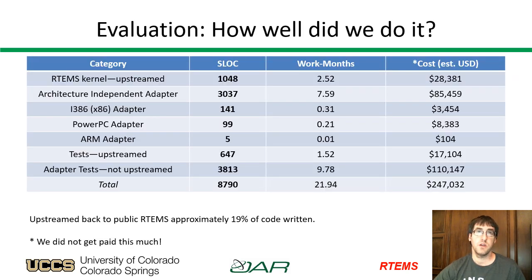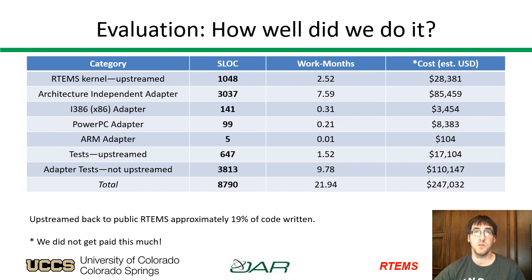Although source lines of code (SLOC) is generally considered a terrible measure of productivity, some useful insights can be made here. 3,037 lines of code are architecture-independent and shared across all architectures, and less than 250 lines of architecture-dependent code is present in the adapters. Almost half of the code written was for DIOS plus RTEMS specific tests. The effort needed to add a new architecture is quite small, with only 5 lines of code added to provide ARM support. Approximately 19% of the code was submitted upstream back to the RTEMS.org public Git repository. Credit also goes to the DDCI engineers who helped identify clean, clever, and small solutions to the integration challenges on their side.